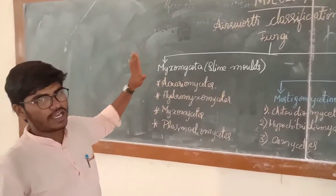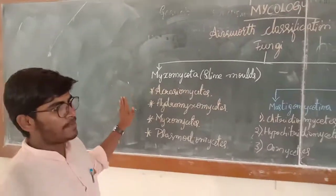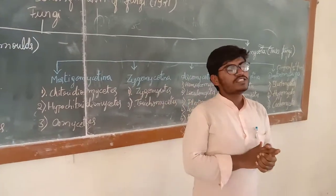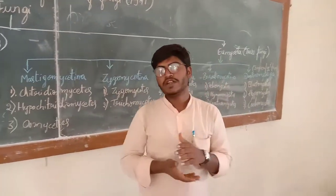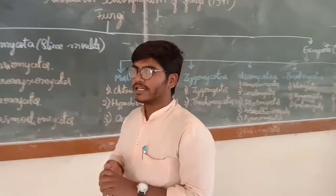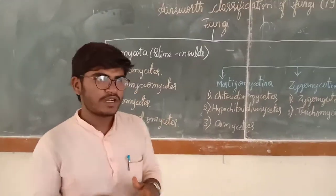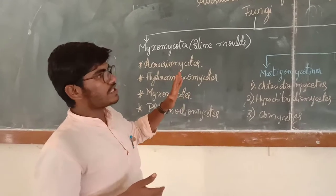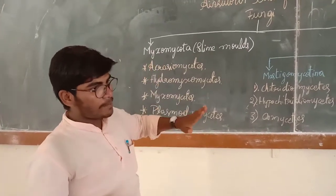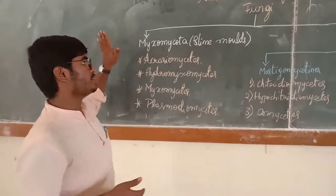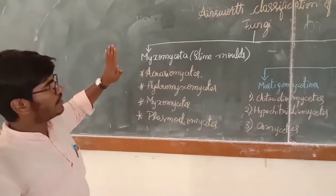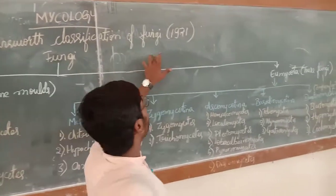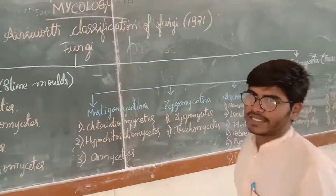Hyphae may be septate or aseptate. Septate means the mycelium is divided into parts and each part consists of a nucleus. Aseptate means there are no divisions, and the hyphae may be multi-nucleate or uni-nucleate.